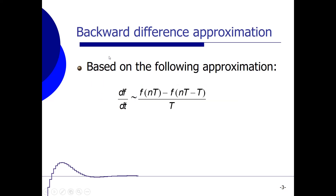Let's start with the backwards difference approximation. It is based on the following approximation: when we have a function f and we take the derivative of f, we can say it's almost equal to f at a certain sample time minus f at the previous sample time, divided by the sample time T. Precondition is that your sample frequency is high enough — say 10 to 20 times the maximal signal frequency or the system bandwidth.